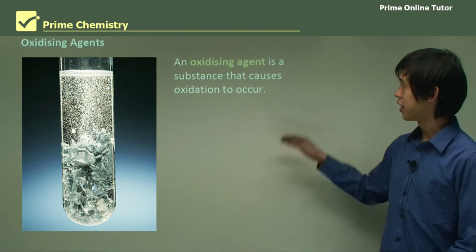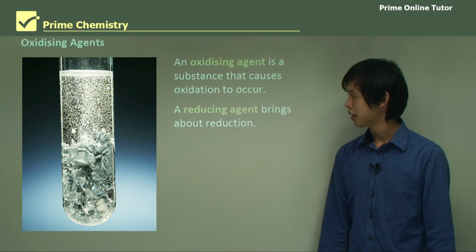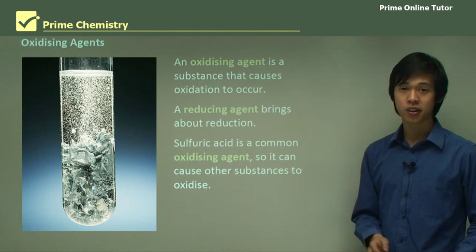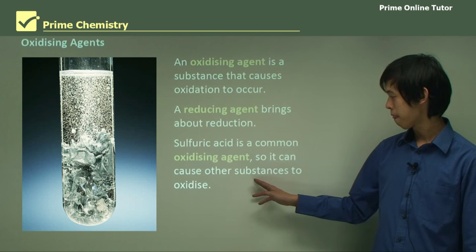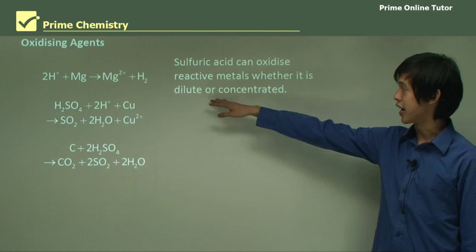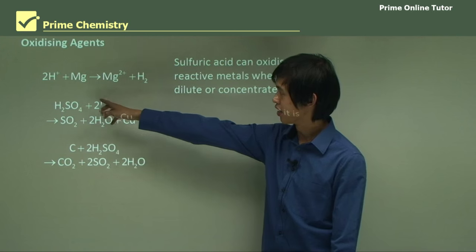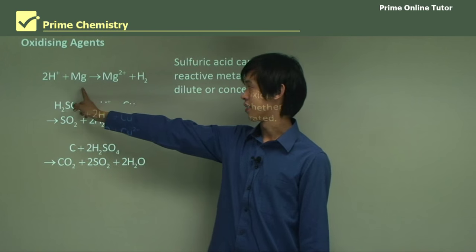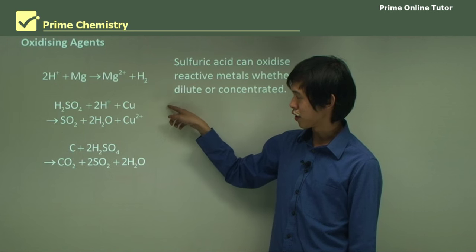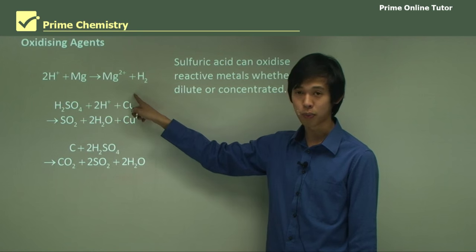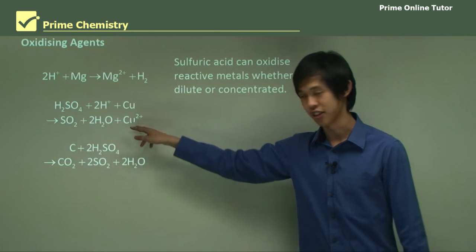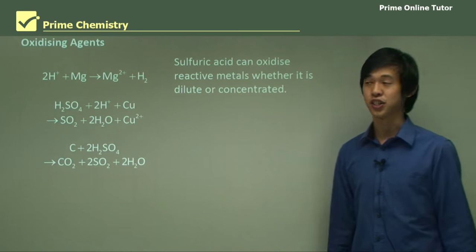In terms of oxidizing agents: an oxidizing agent is a substance that causes oxidation, while a reducing agent brings about reduction. Sulfuric acid is a very common oxidizing agent — it causes oxidation very readily. As an oxidizing agent, it can oxidize reactive metals whether dilute or concentrated. For example, H⁺ from sulfuric acid plus magnesium gives the magnesium ion and hydrogen gas. Similarly, sulfuric acid with copper oxidizes copper to form water and the copper ion. So it oxidizes metals and also carbon.